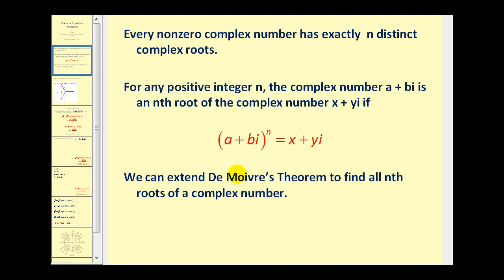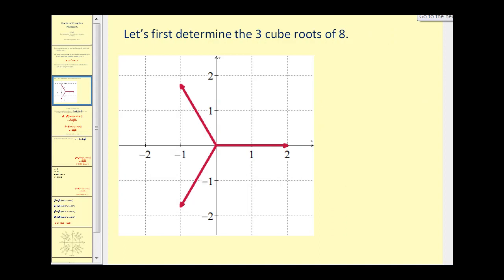We can extend De Moivre's theorem to find all nth roots of a complex number. But before we do that, let's take a look at finding the three cube roots of eight. We've already done something like this — since eight is a real number, we can set x cubed equal to eight and solve, and the solutions will be the cube roots of eight.